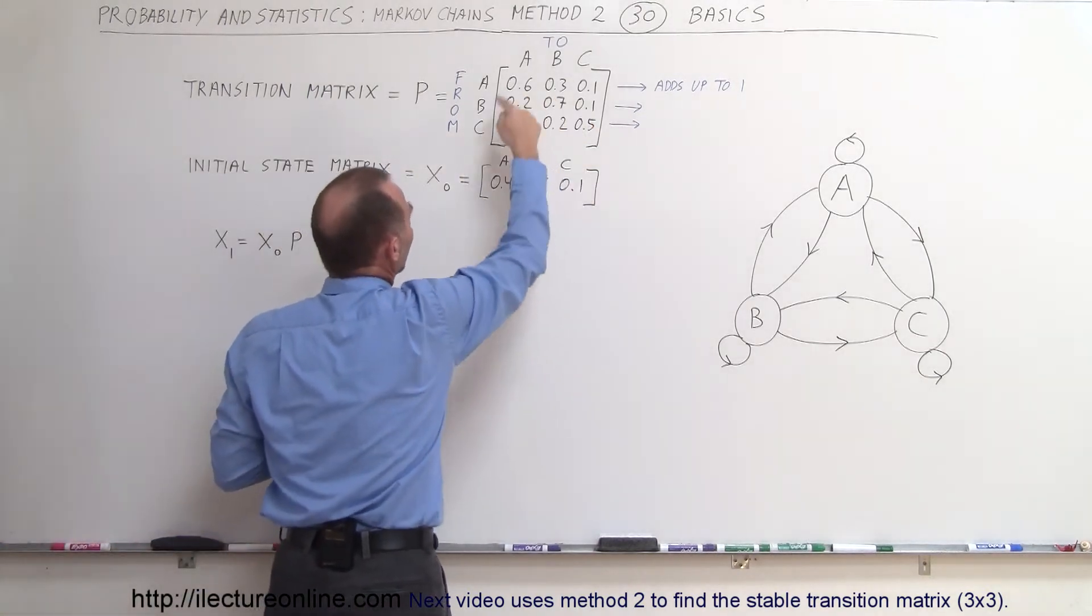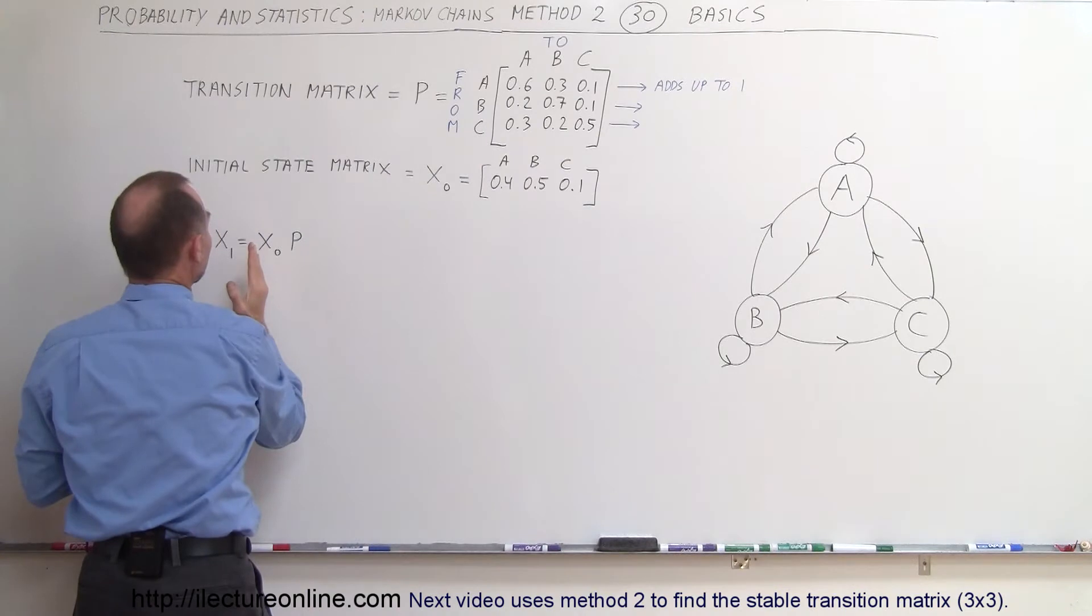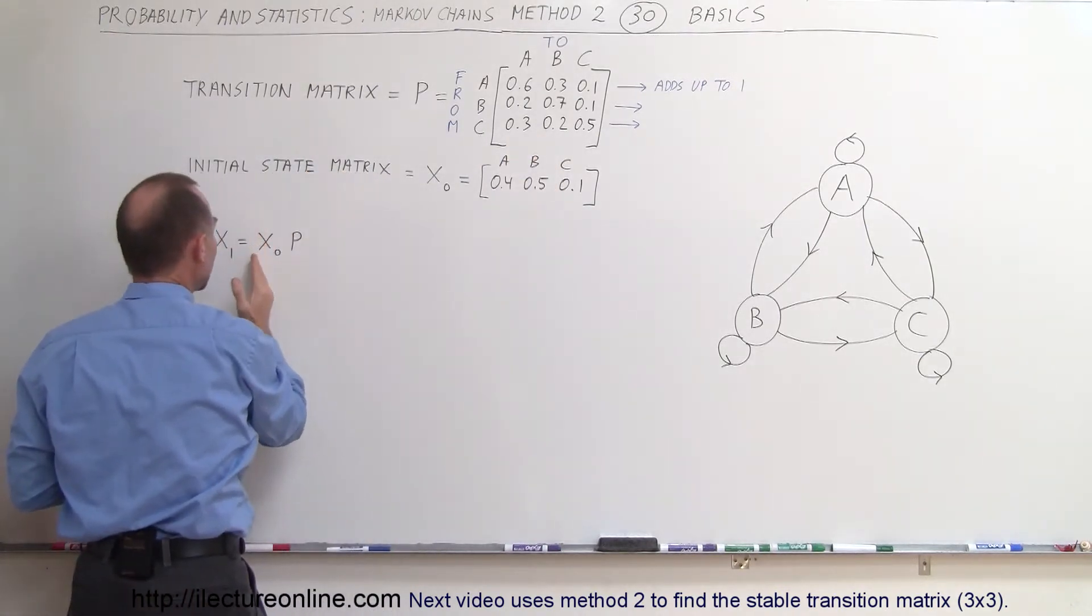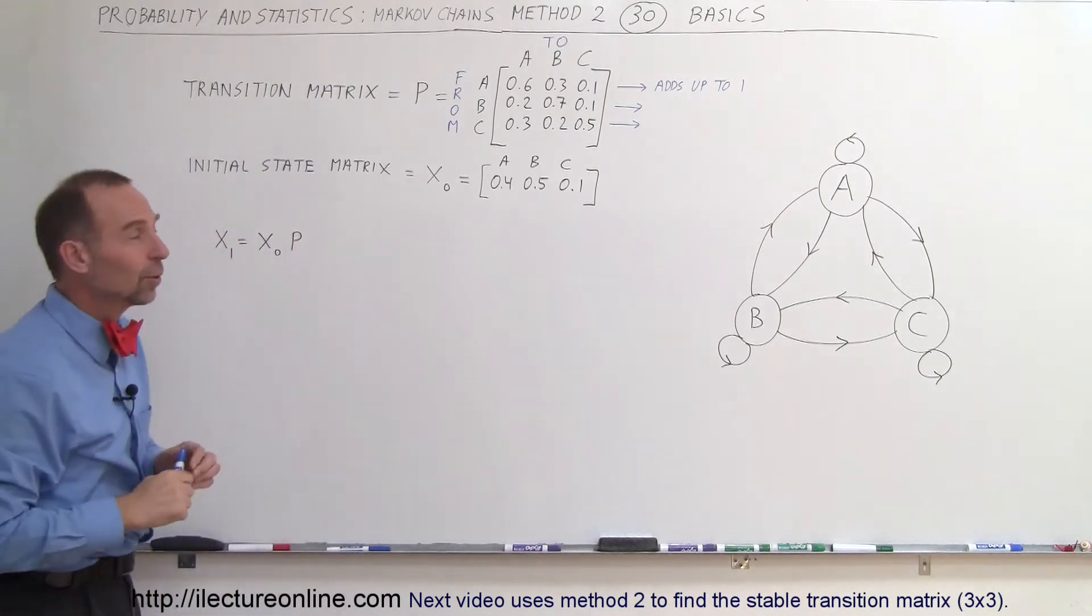Since this is horizontal and this is a 3 by 3 we have to multiply the X sub 0 is a 3. If it's a vertical matrix then we have to multiply P times X sub 0. So there's a different method of doing that.